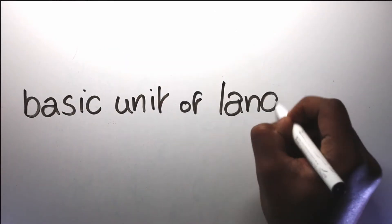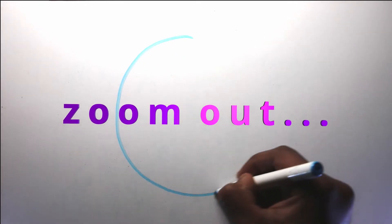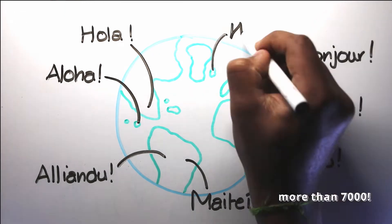In the last video, we looked at the behaviors of the most basic unit of language, sounds. Now, we're going to zoom out as far as we possibly can, and look not just at whole languages, but at our whole planet, bursting with more than 7,000 different languages.